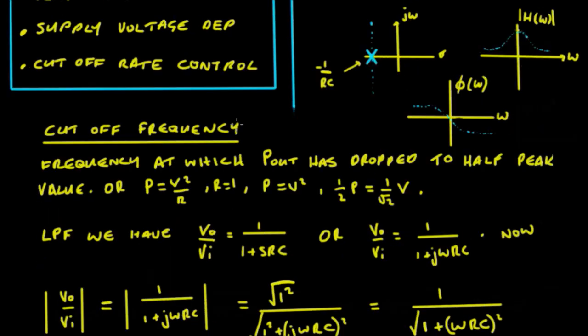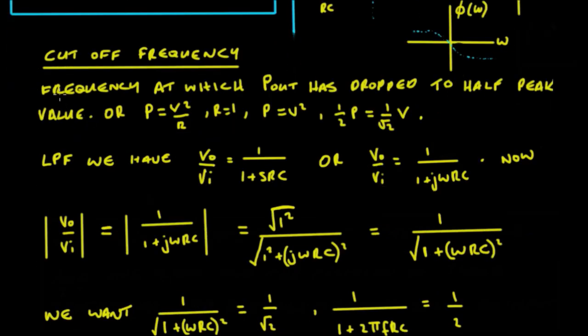So now another thing we'll cover here is the cutoff frequency of this low pass filter. So the frequency at which the output power has dropped to half of the peak value, or the power is equal to V squared upon R. So if R equals 1, we say power is equal to V squared. So if we were to half the power, it's equivalent to having 1 upon root 2 of the voltage because it's related by the V squared term.